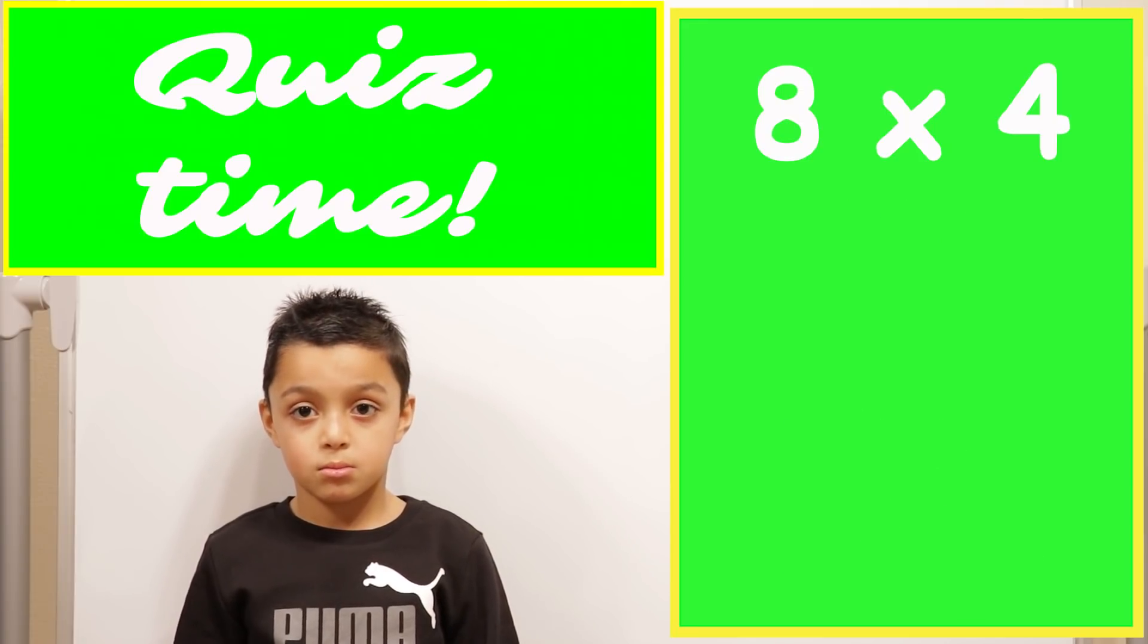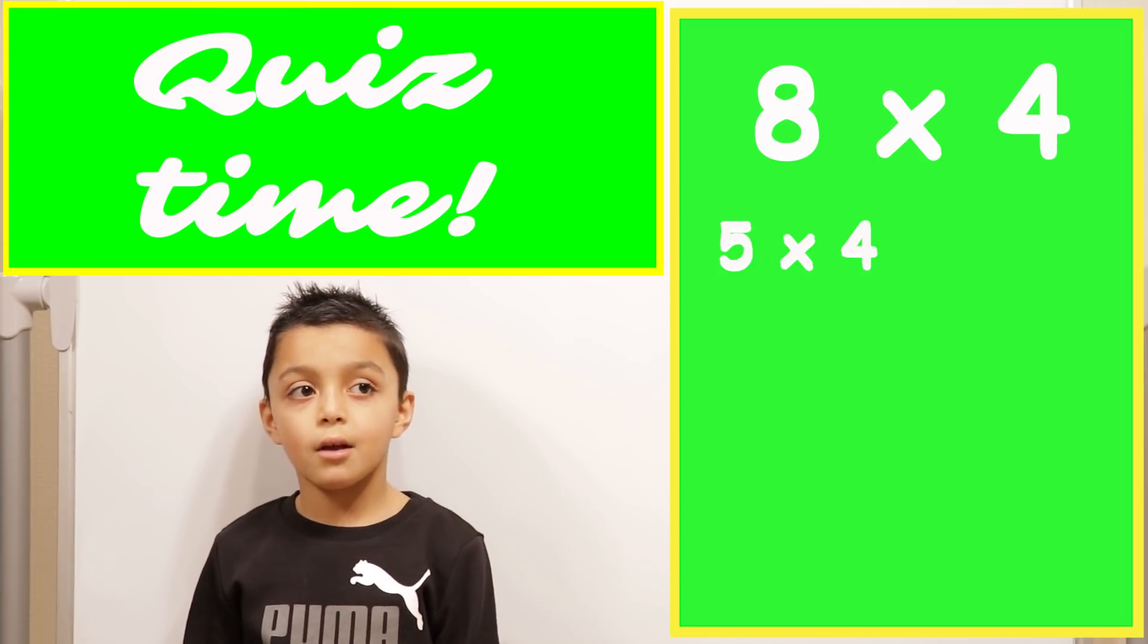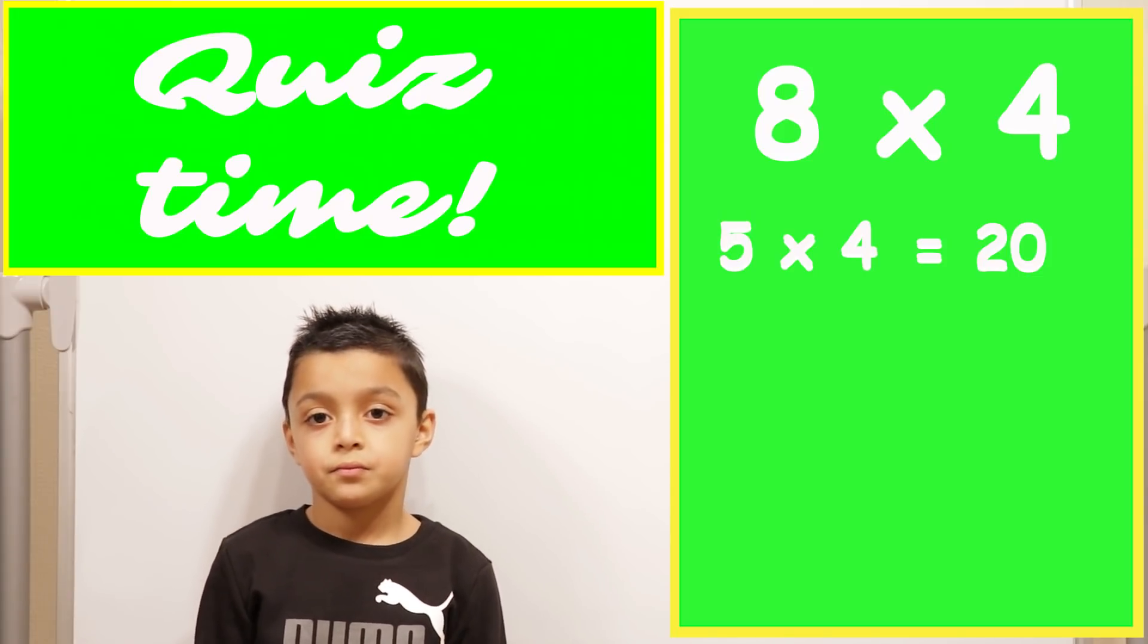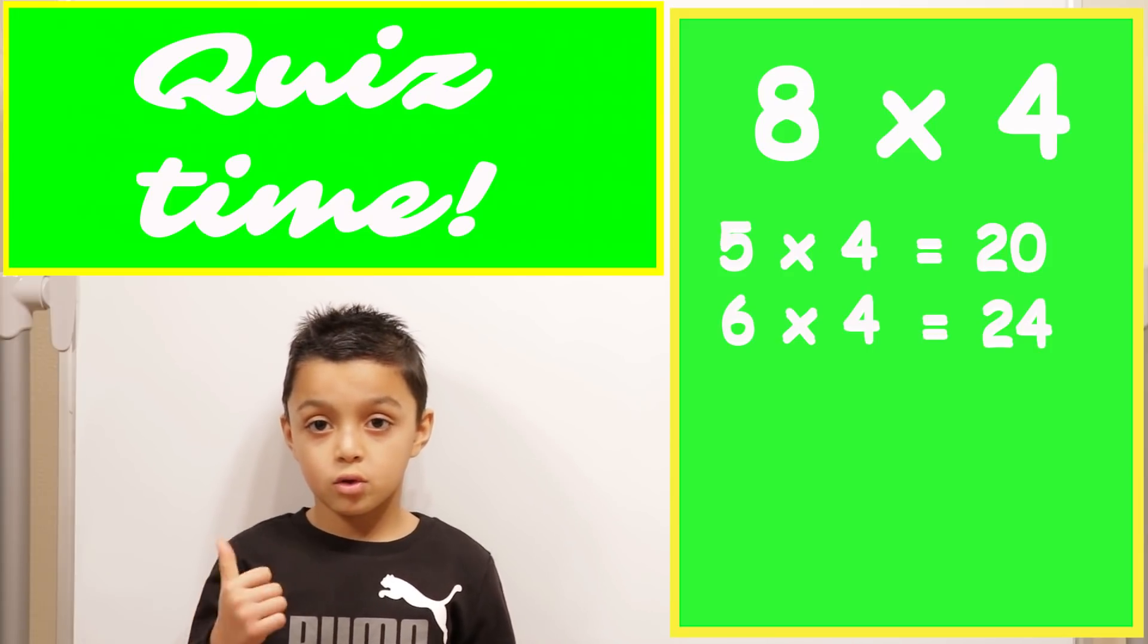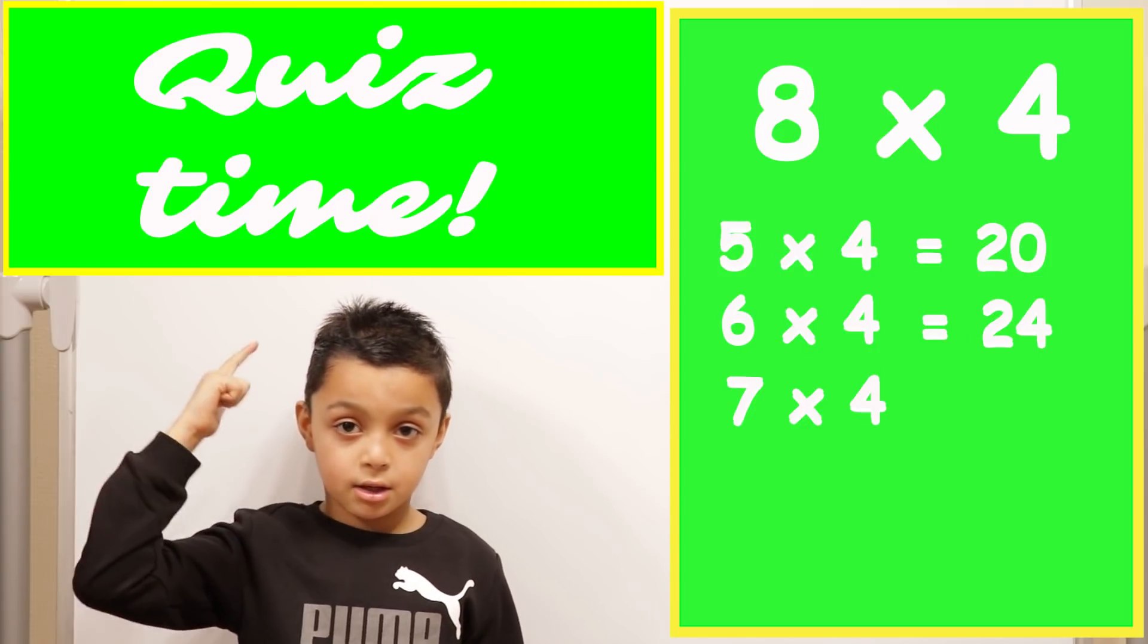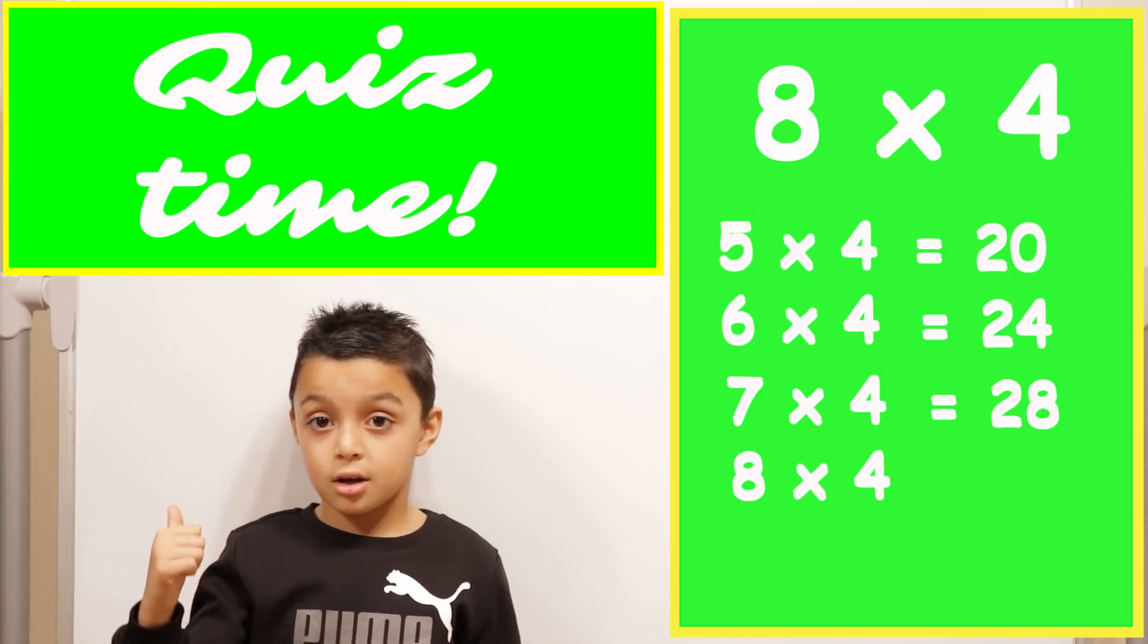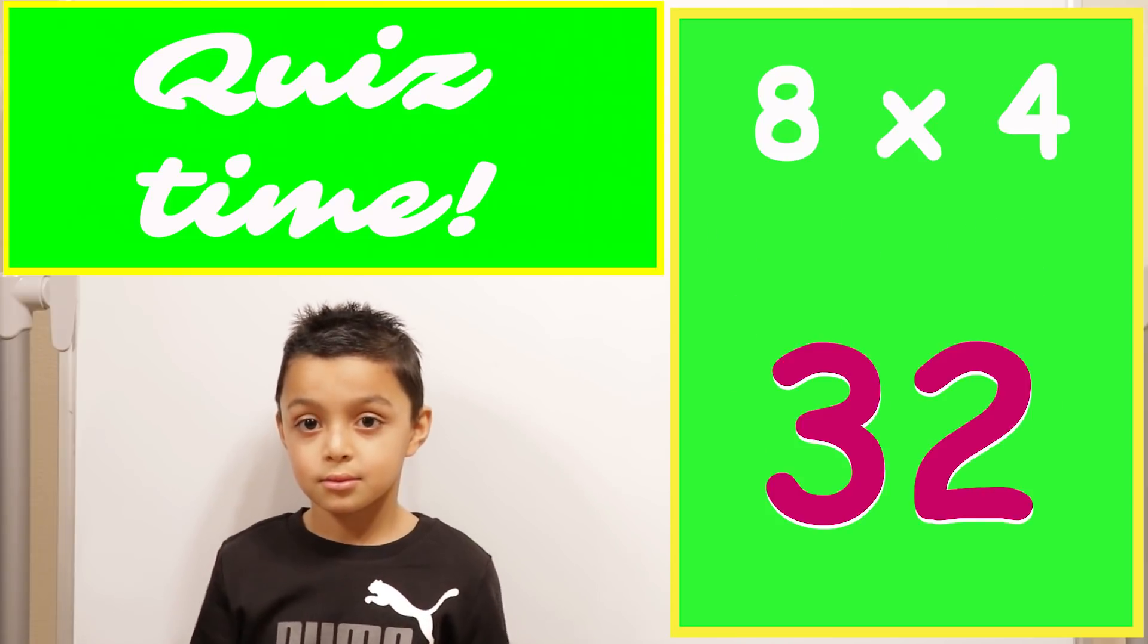Now let's show everyone at home another way to work out eight times four. Do you know what five times four is? Twenty. Okay, so now using your fingers, if you know what five times four is, what will six times four be? Twenty-four. So twenty-one, twenty-two, twenty-three, twenty-four. And then seven times four? Twenty-five, twenty-six, twenty-seven, twenty-eight. And finally eight times four? Twenty-nine, thirty, thirty-one, thirty-two. Thirty-two, so it's the same answer. Very good.